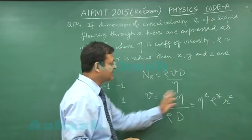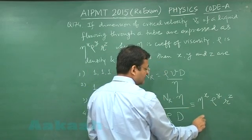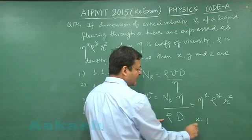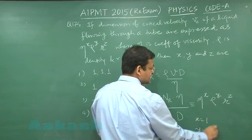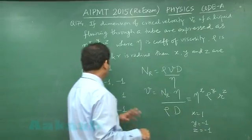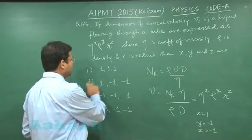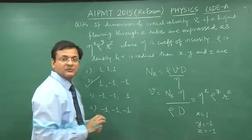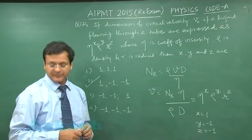So if you compare these two, you can clearly see x power will be 1, but y power will be minus 1 and z power will be again minus 1. So that gives you the idea that option 2 will be correct option for this question 174. Switch over to next question 175.